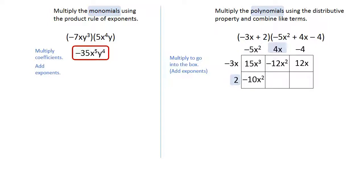In the second box on the bottom, 2 times 4x is positive 8x, and in that last square, it's 2 times negative 4, which gives us a negative 8.